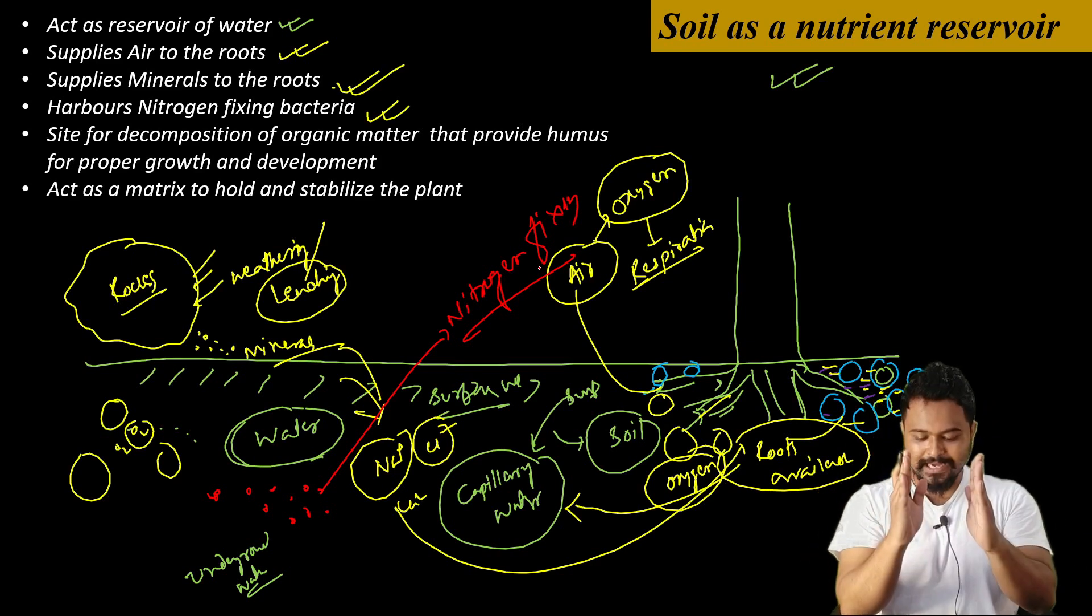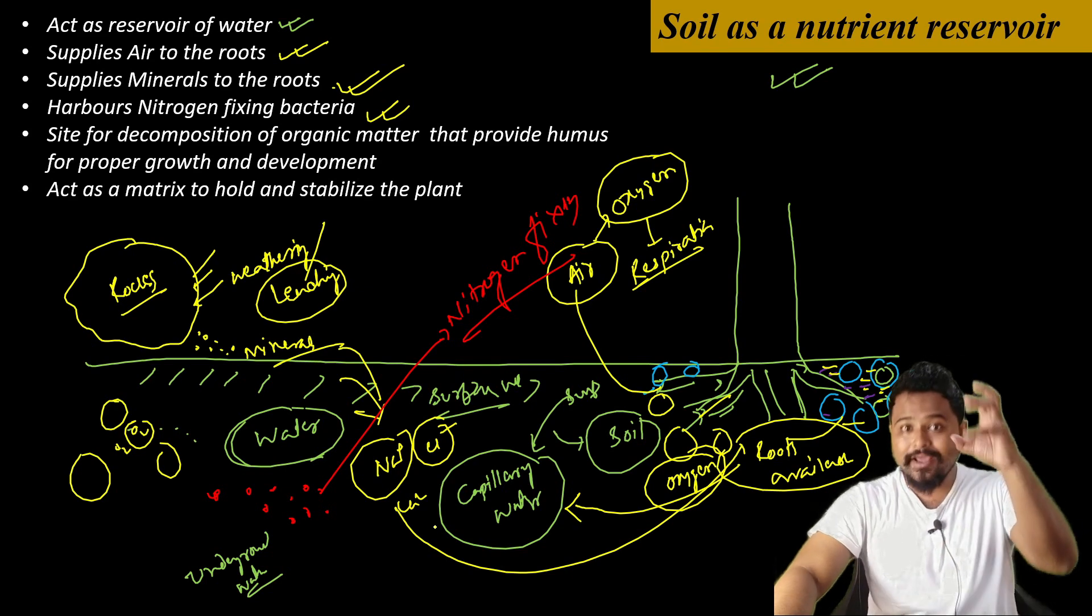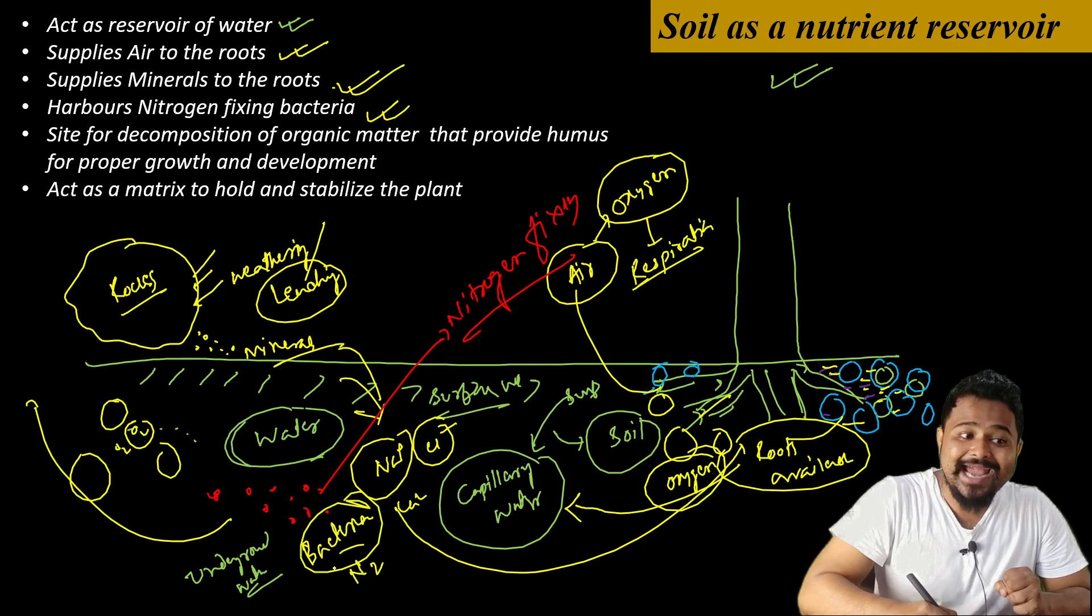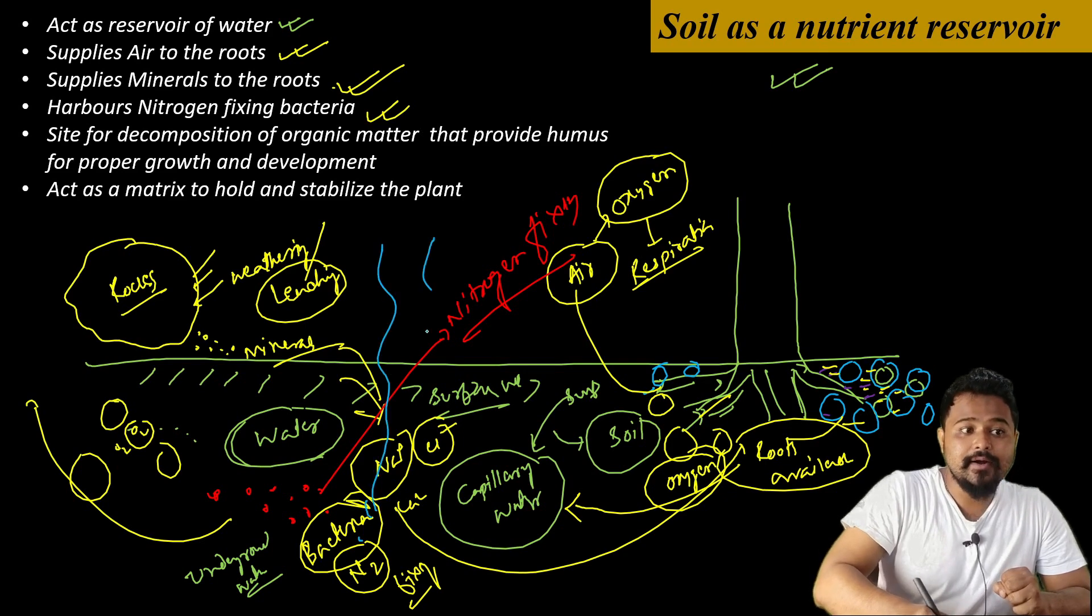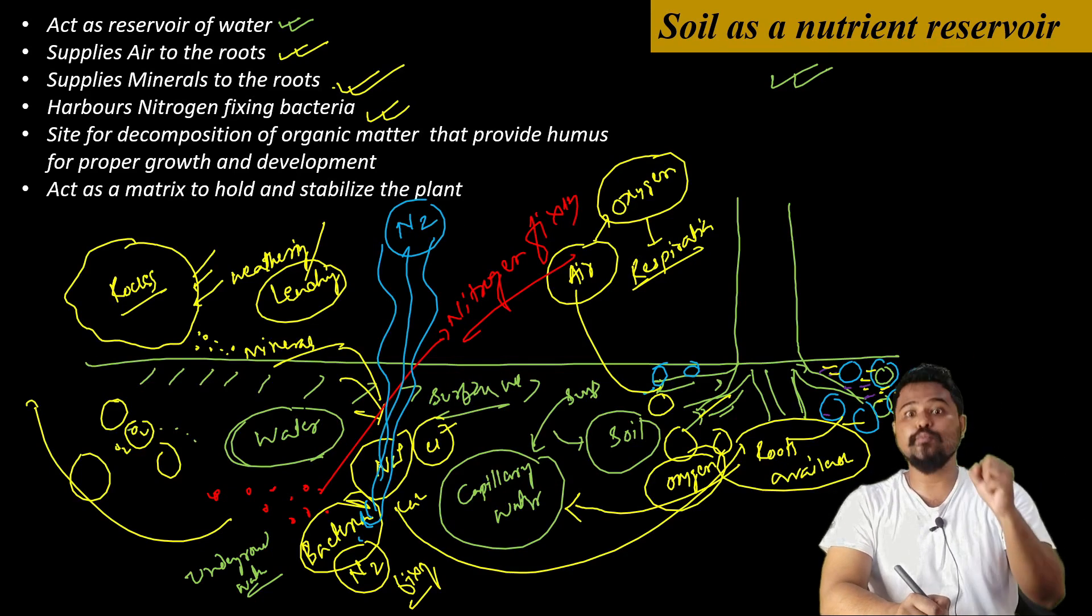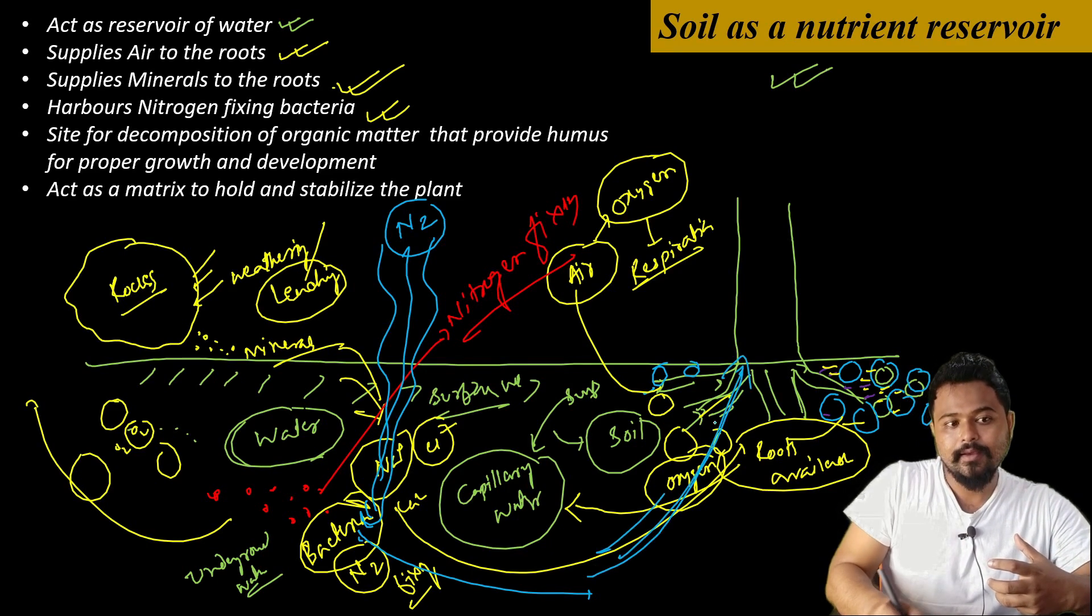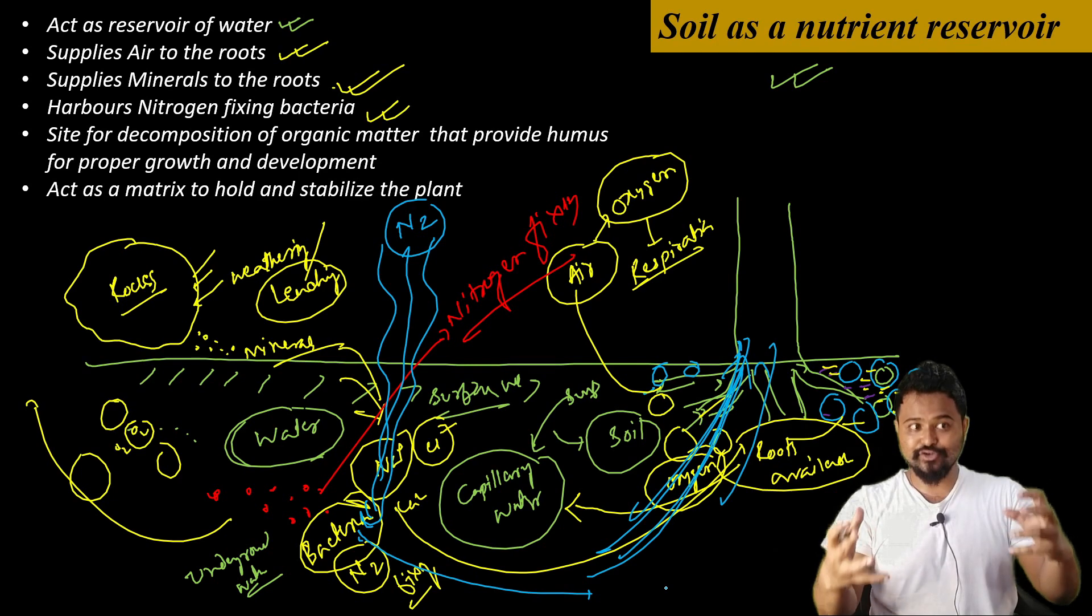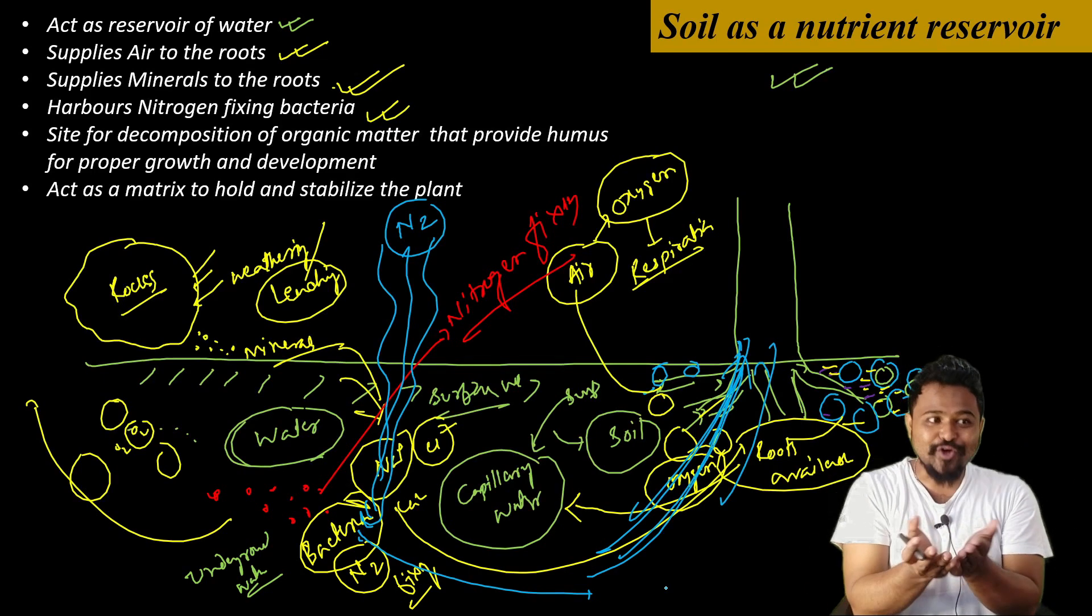Nitrogen is a very important element. In the soil, these bacteria fix nitrogen. What are nitrogen-fixing bacteria? These bacteria convert nitrogen into different forms that plants can absorb through their roots. So nutrients, nitrogen from the soil, and bacteria - because of these bacteria, soil acts as a nutrient reservoir.